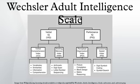Performance IQ included six tests and also provided two sub-indexes: perceptual organization and processing speed. The perceptual organization index included: block design, matrix reasoning, and picture completion. The processing speed index included: digit symbol coding and symbol search — two tests. Picture arrangement and object assembly were not included in the indexes. Object assembly is not included in the PIQ.